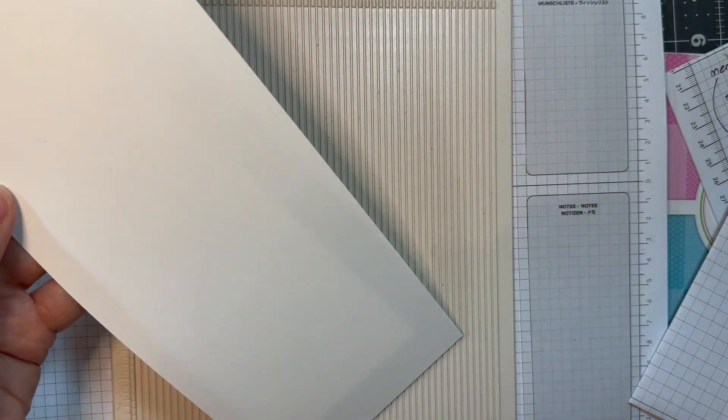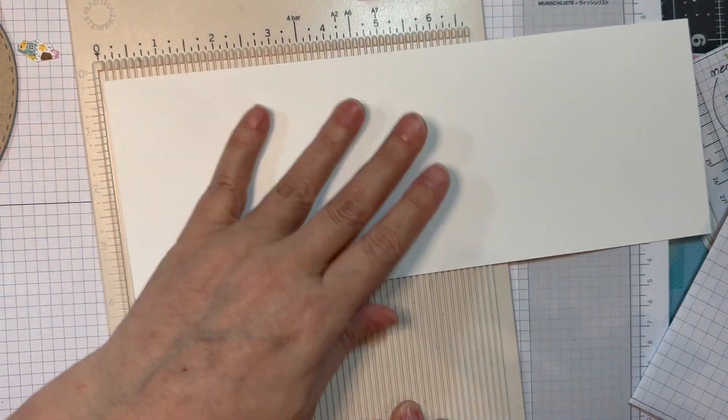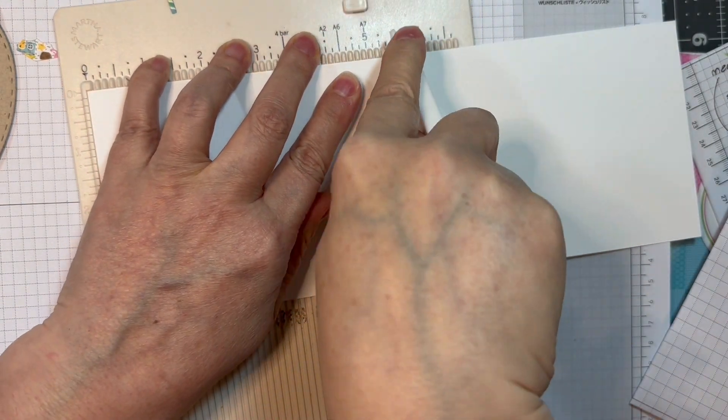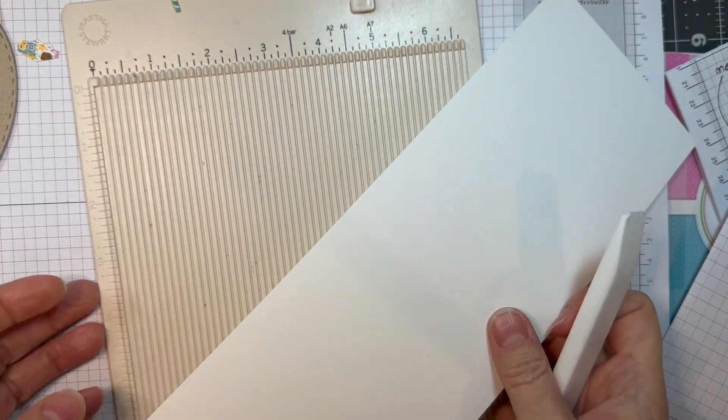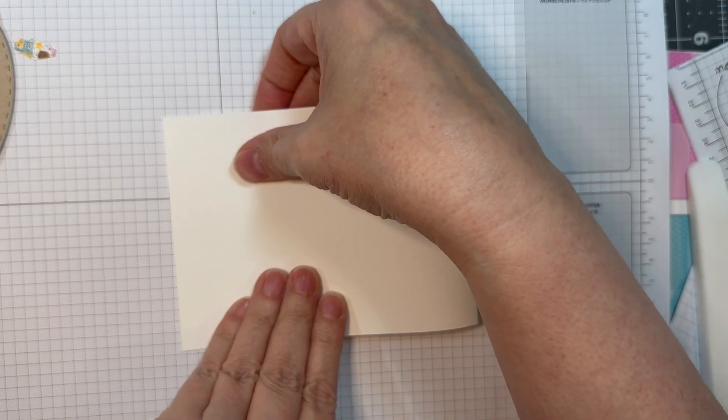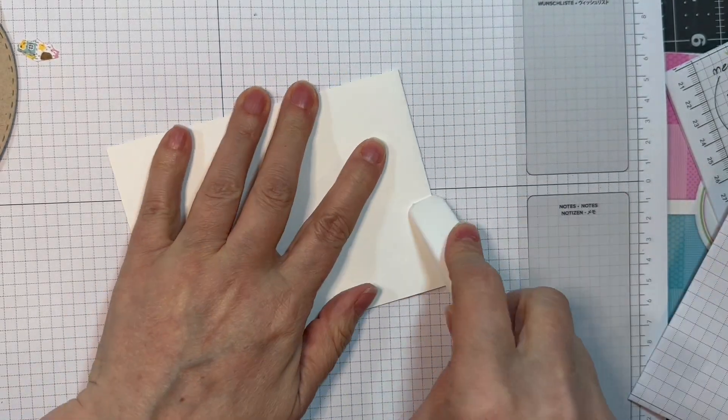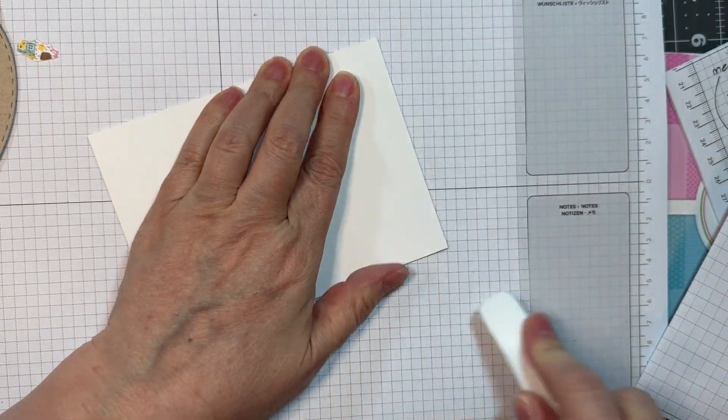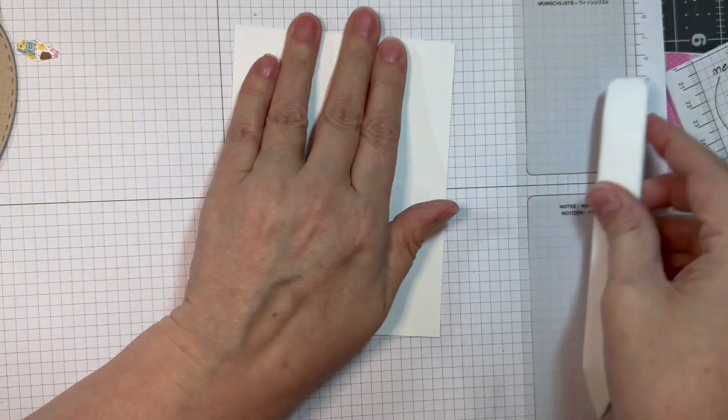I've got a piece of Simon Says Stamp Heavyweight White Card Stock cut at 4.25 by 11 inches, scored at 5.5 inches to make an A2 size vertical card, using my Teflon bone folder to score that and reinforce the fold. I'm working on a Stampin' Up Pad as per usual.